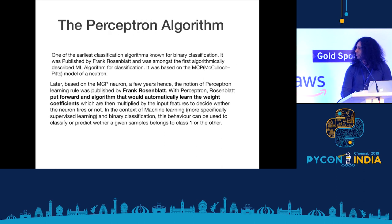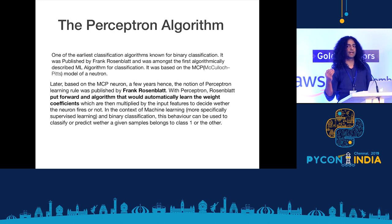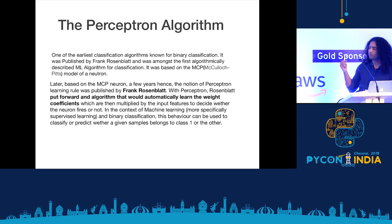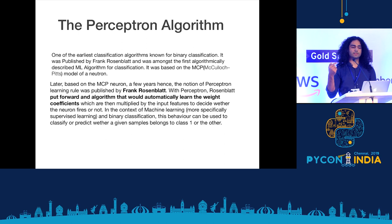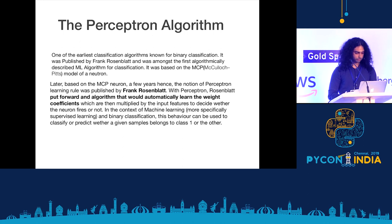Shortly after, Frank Rosenblatt proposed the perceptron algorithm based on the MCP model. The perceptron was the first algorithmically described ML algorithm, in which he proposed that the algorithm would automatically learn the weight coefficients, which when multiplied by the input samples would decide whether the MCP neuron would fire or not. This could be used for classification purposes: if it fires, classify as 1, else minus 1.